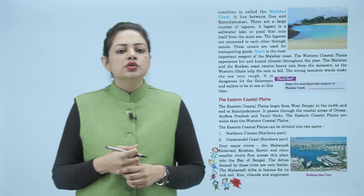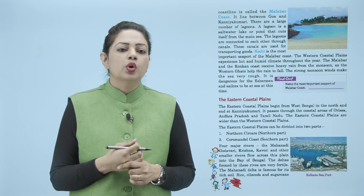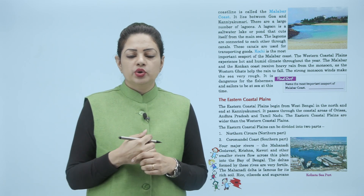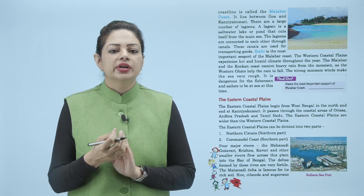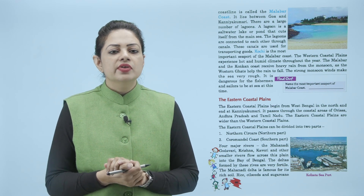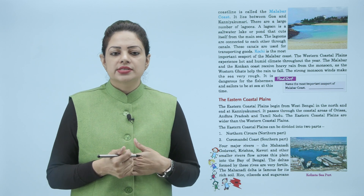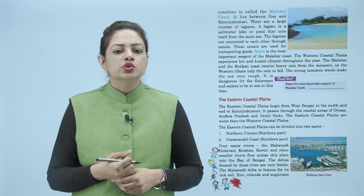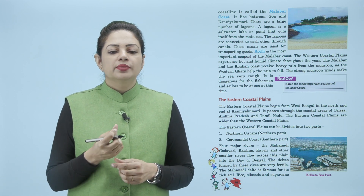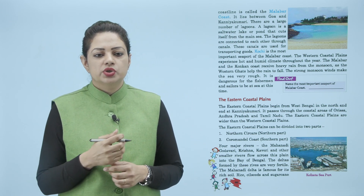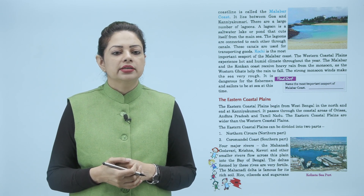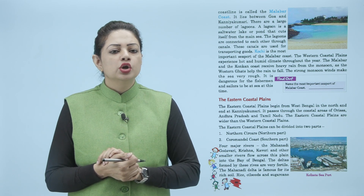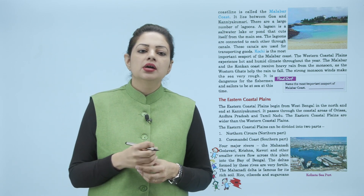The western coastal plains experience hot and humid climate throughout the year — pure saal bahut jyada garmi aur humidity hoti hai. The Malabar and the Konkan coast receive heavy rain from the monsoon, as the western ghats help the rain to fall. The strong monsoon winds make the sea very rough. It is dangerous for the fishermen and sailors to be at sea at this time.